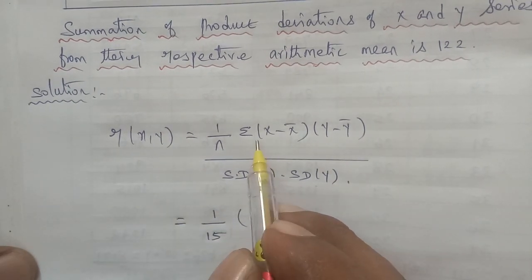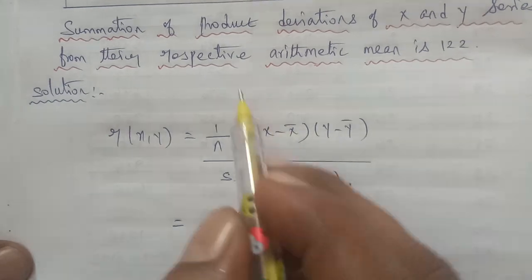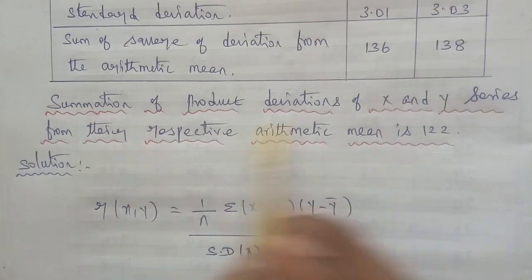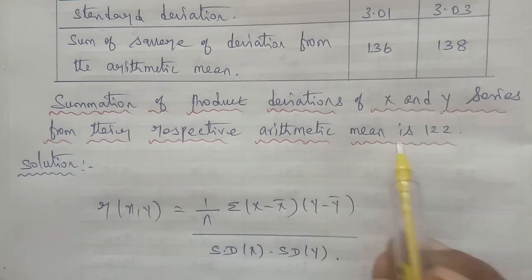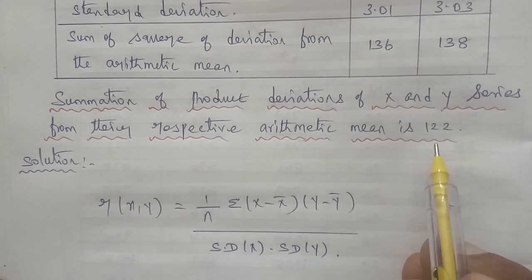And summation of x minus x bar, y minus y bar. The value of the product deviation X and Y series from the respective arithmetic mean is 122. So the value is 122.